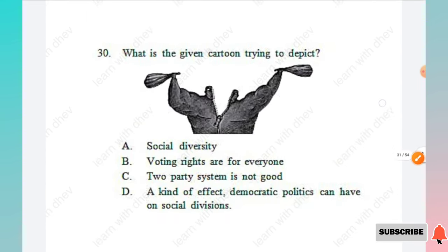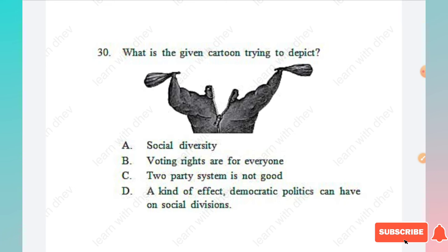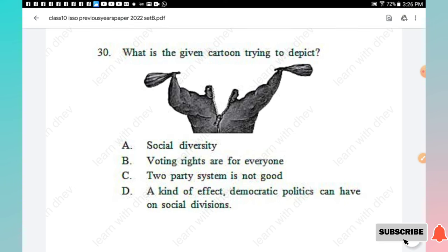Question 30: What is the given cartoon trying to depict? Options: social diversity, voting rights are for everyone, two-party system is not good, a kind of effect democratic politics can have on social divisions. The right answer is Option D.